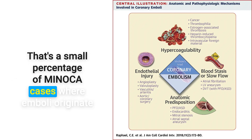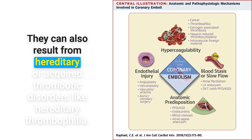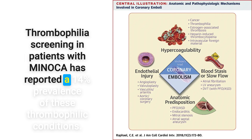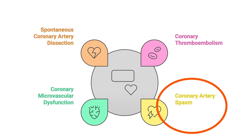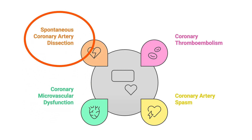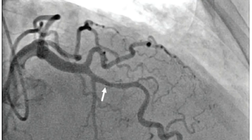Non-atherosclerotic causes include coronary thromboembolism, where emboli originate from thrombi in systemic arteries, cardiac valves, or chambers, or from hereditary or acquired thrombotic disorders. Thrombophilia screening in MINOCA patients has reported a 14% prevalence of thrombophilic conditions. Coronary spasm is responsible for 2% of MINOCA cases and can be epicardial or microvascular. Coronary microvascular dysfunction and spontaneous coronary dissection — non-traumatic, non-atherosclerotic, non-iatrogenic — can also be rare causes of MINOCA.